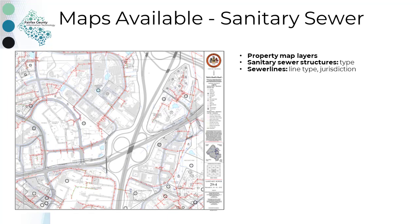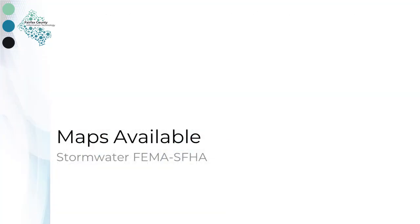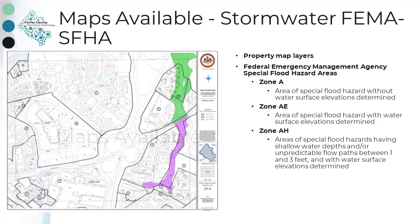Sanitary sewer maps display all the property map layers plus the wastewater collection system, which includes sanitary, also known as wastewater, sewer structures and sewer lines. Sanitary sewer structures include various structure types such as chambers, meters, and pump stations. The stormwater maps also show Federal Emergency Management Agency Special Flood Hazard Areas, which are areas that have special flood, mud flow, or flood-related erosion hazards. The maps display FEMA flood hazard area zones A, AE, and AH, as well as all the property map layers.